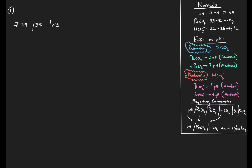Let's interpret this one using our ABC process. Step A is to determine the acid-base status - look at the pH. So 7.38: looking at our normal value of 7.35 to 7.45, that pH is normal. So our pH is normal.